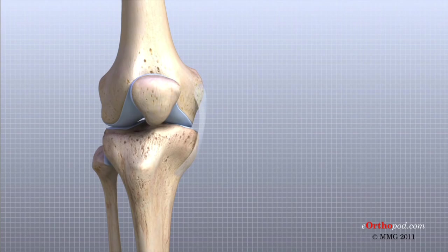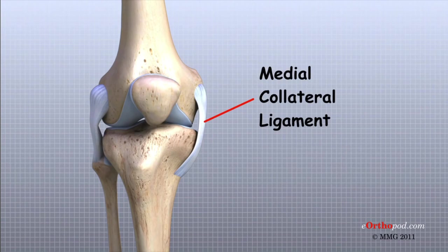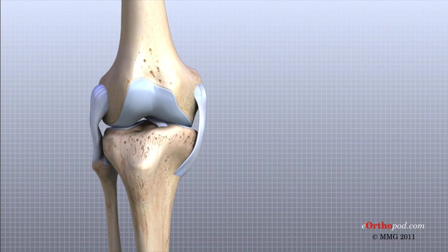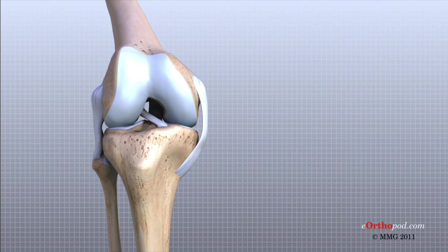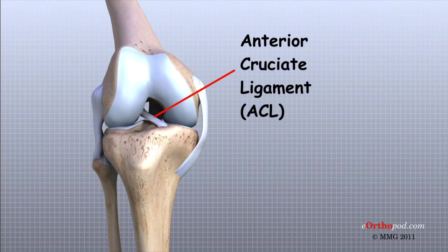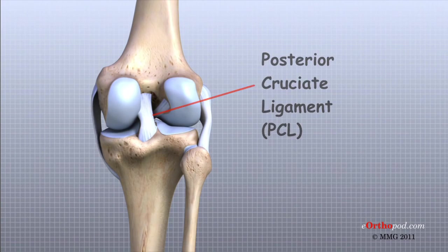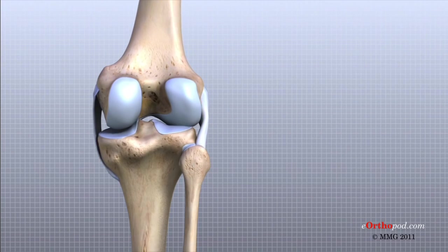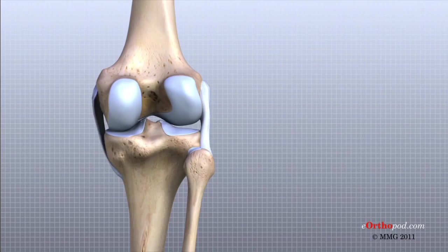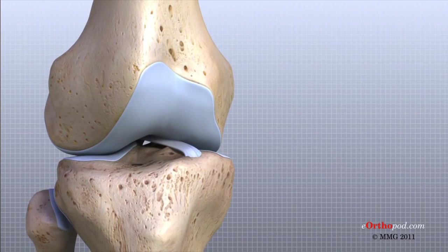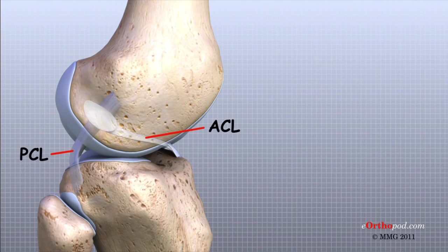Ligaments are tough bands of tissue that connect the ends of bones together. Two important ligaments are found on either side of the knee joint: the medial collateral ligament or MCL and the lateral collateral ligament or LCL. Inside the knee joint, two other important ligaments stretch between the femur and the tibia — the anterior cruciate ligament or ACL in front and the posterior cruciate ligament or PCL in the back. The ACL keeps the tibia from sliding too far forward in relation to the femur, while the PCL keeps the tibia from sliding too far backward.